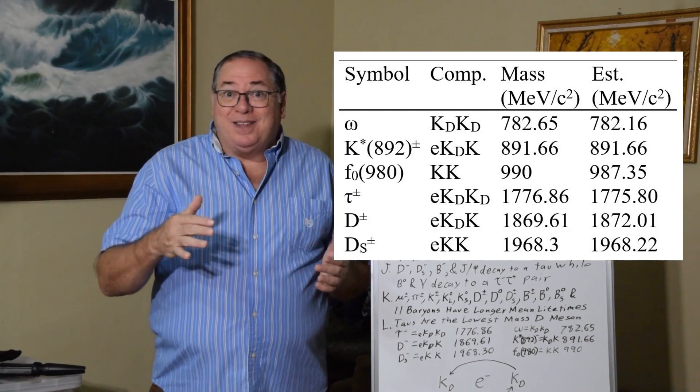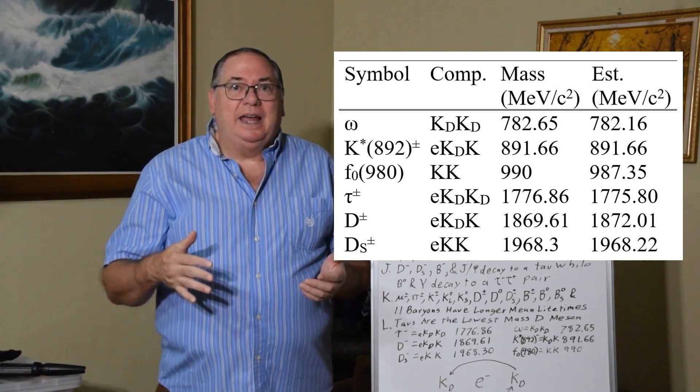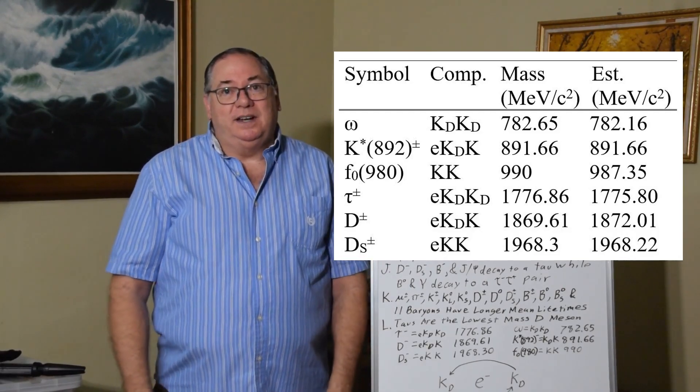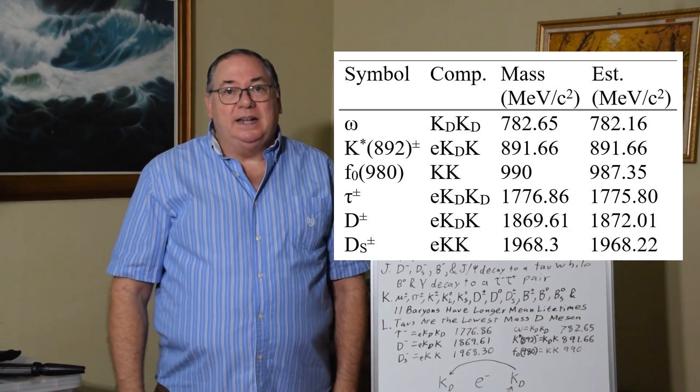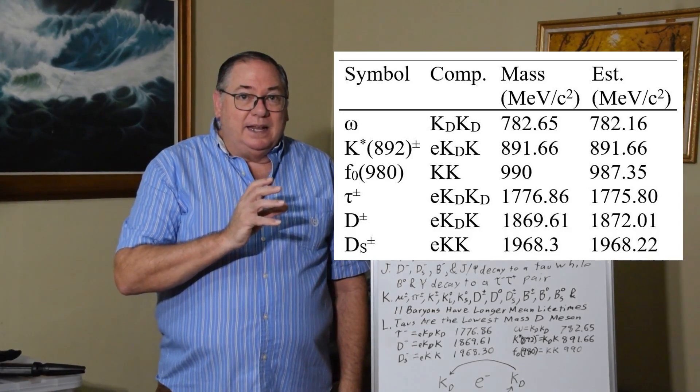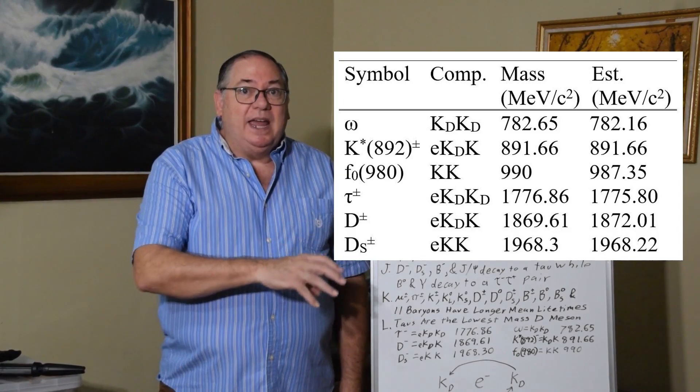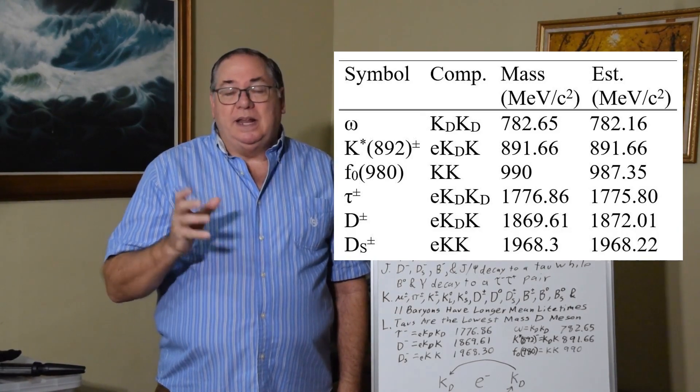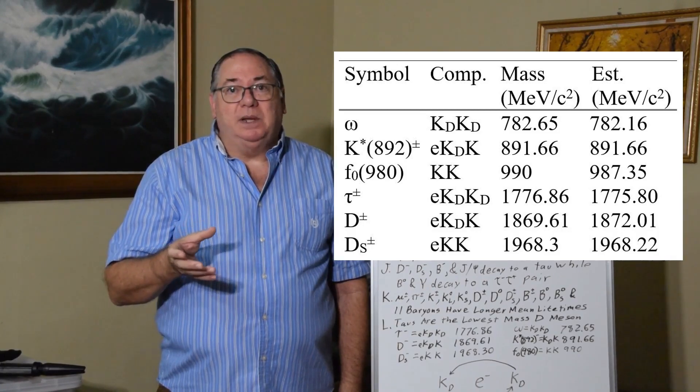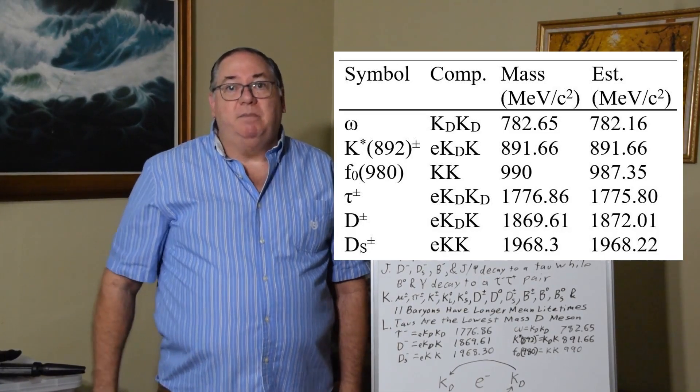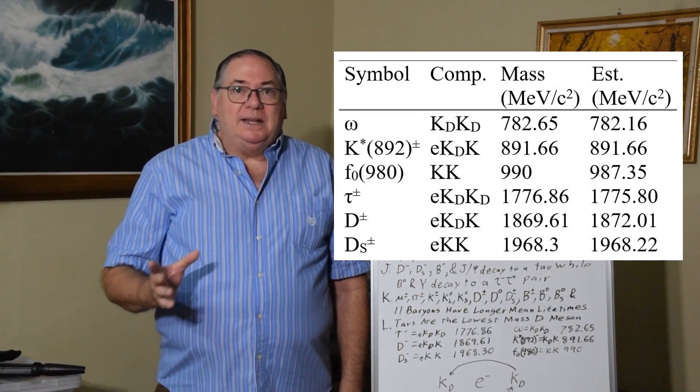And so, when you crack the code, as it appears I have, then the tau definitely looks like it's just another D-meson. It's the lowest energy D-meson. So, it's the lightest one so it doesn't decay to other D-mesons, which makes it look more special. And that's why it decays more commonly to an electron than a regular D-meson. But that doesn't make it a lepton.